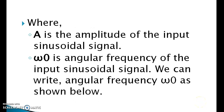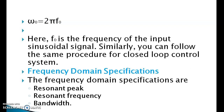Where A is the amplitude of the input sinusoidal signal, and ω₀ is the angular frequency of the input sinusoidal signal. We can write the angular frequency as ω₀ = 2πf₀, where f₀ is the frequency of the input sinusoidal signal. Similarly, you can follow the same procedure for closed loop control systems.